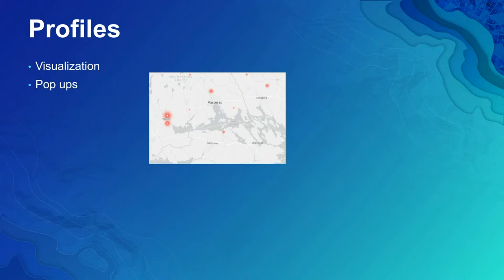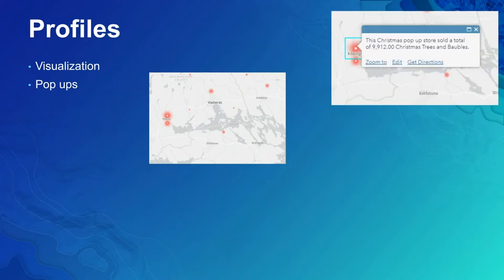Pop-ups: you can use Arcade in the pop-up template of the JavaScript API. Similar to the visualization profile, this is useful when you want to display data that isn't present as an attribute value in your feature layer instance. We'll dig into this further in the demonstrations. In this example, I've used the same script as in the visualization profile, and now I'm displaying the total sales in the pop-up.